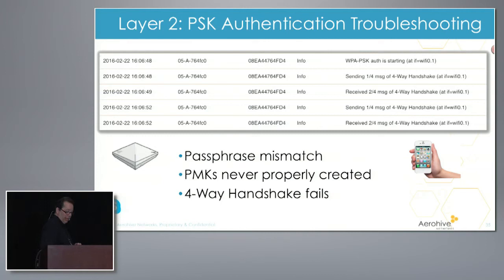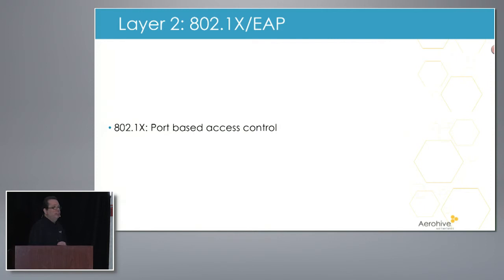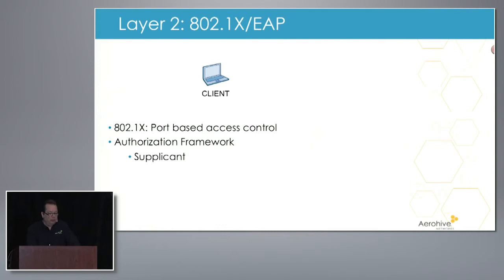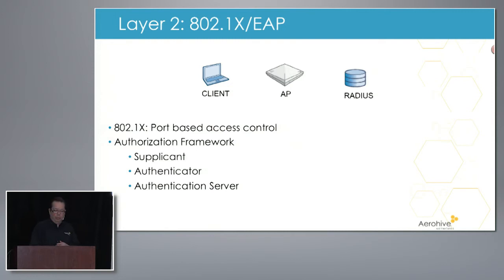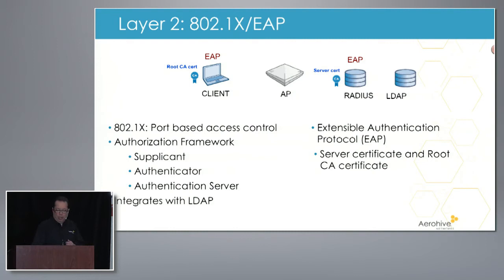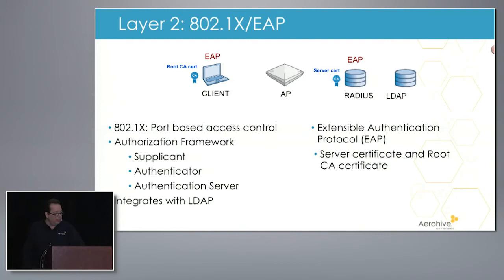PSK authentication: if they're simply typing in the wrong passphrase, it happens more commonly than you'd think. Now, 802.1X is a lot more complex. 802.1X uses port-based access control, an authorization framework that requires a supplicant — the client trying to get on the network — an authentication server that validates the client credentials, and the access point which is the authenticator in between the two. It integrates with LDAP, uses a layer two authentication protocol called EAP, and when properly deployed uses a server-side cert and a root cert that has to be installed on the supplicant. So there are a lot of points of failure.